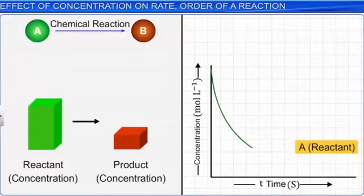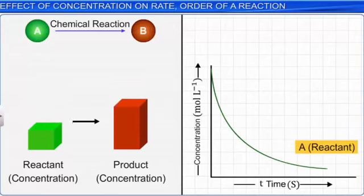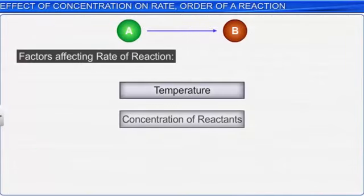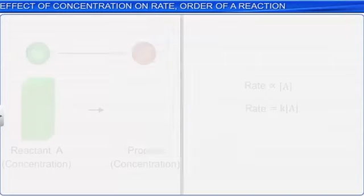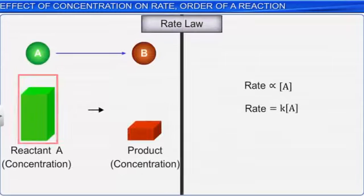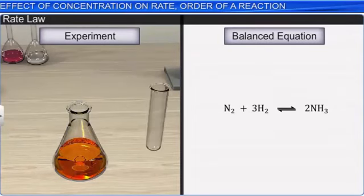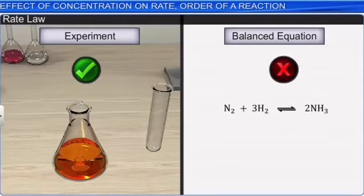You have already learned that the rate of a reaction decreases with a decrease in the concentration of the reactants. Thus, one of the factors that determine the rate of a reaction is the concentration of the reactants. The representation of the rate of a reaction in terms of the concentration of its reactants is known as the rate law, also called the rate equation or rate expression. It is important to note that the reaction rate in terms of the concentration of the reactants can only be determined experimentally and cannot be determined from the balanced equation.